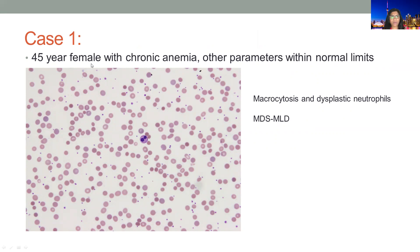Case number one: a 45-year-old female with chronic anemia; all other parameters were within normal range. The peripheral blood film shows a dimorphic picture with increased polychromasia. Some cells are round macrocytes, some are hypochromic, and some are small. There is a dysplastic neutrophil — a Pelger-Huët neutrophil. This patient has macrocytosis and dysplastic neutrophils, indicating at least two abnormalities. The diagnosis is MDS with multilineage dysplasia.